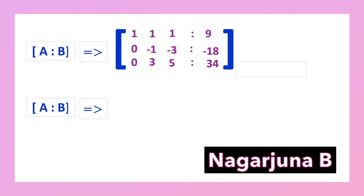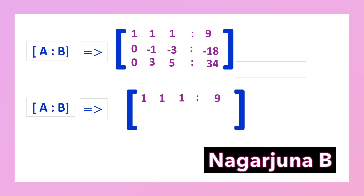Here a22 is minus 1 and a32 is 3. We need to make 3 zero. Since the second element of R2 is minus 1, multiplying by 3 gives minus 3. So applying R3 = R3 + 3*R2 will make 3 become zero. We write the first two rows as they are: [1, 1, 1 | 9] and [0, -1, -3 | -18].